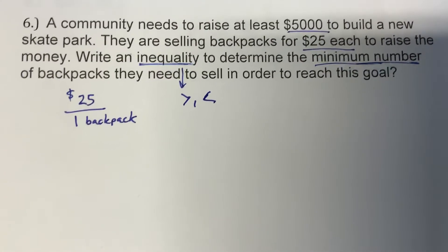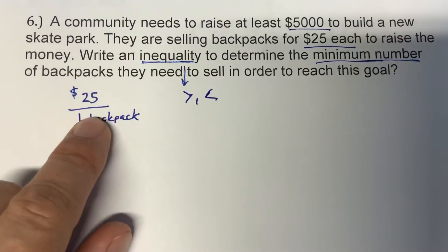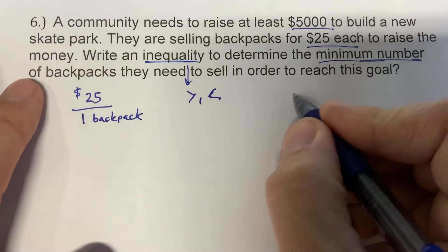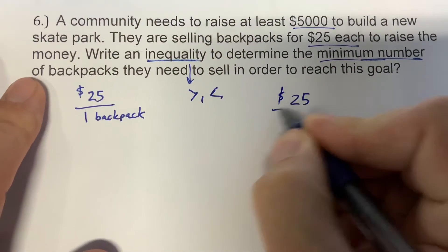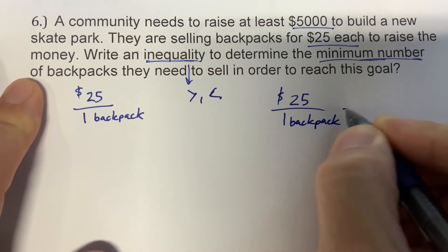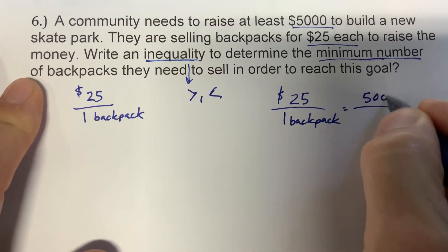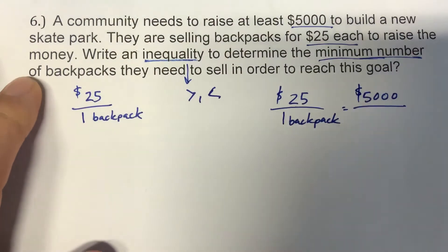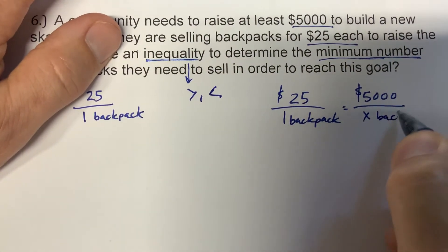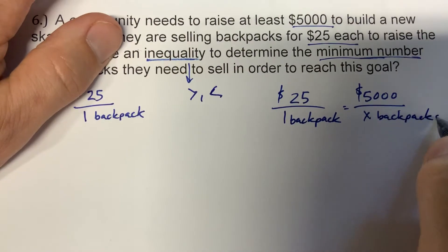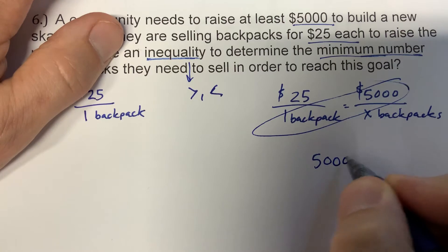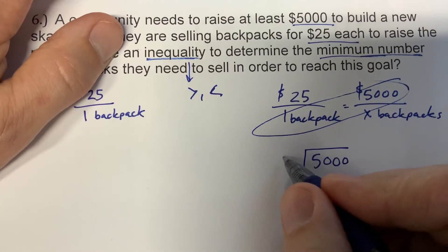If one backpack is $25, and we want to raise $5,000, there's our third number for a proportion. One backpack is $25; I want to know how many backpacks I need to sell for $5,000. So I'm going to cross-multiply: 5,000 times 1 is 5,000, divided by 25.